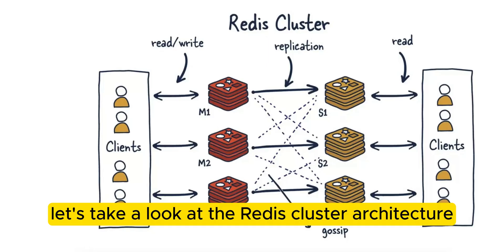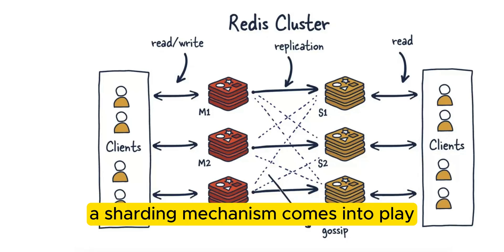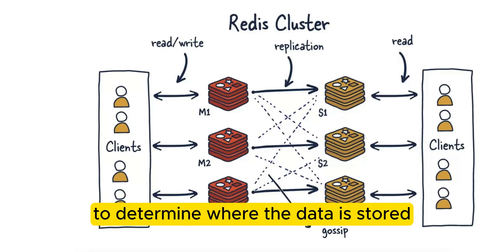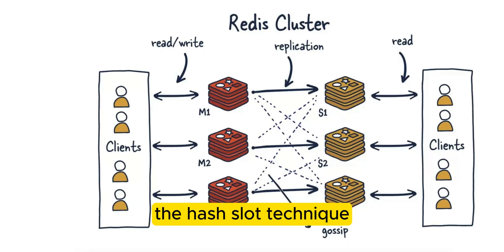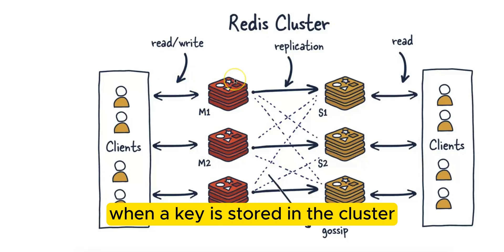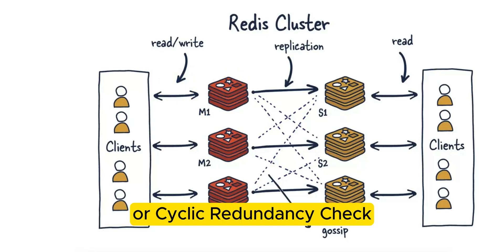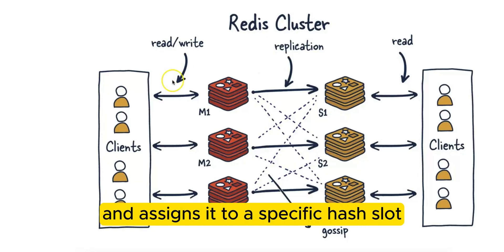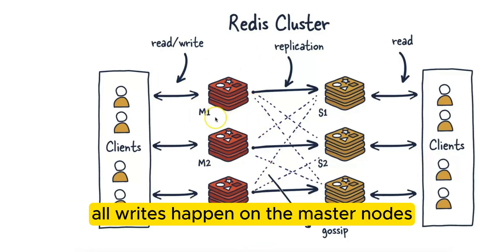Let's take a look at the Redis cluster architecture. When you store a new key-value pair in a Redis cluster, a sharding mechanism comes into play to determine where the data is stored. This sharding mechanism is known as the hash slot technique. When a key is stored in the cluster, Redis hashes the key using the CRC16, or cyclic redundancy check, algorithm, and assigns it to a specific hash slot which is mapped to a particular master node. All writes happen on the master nodes.